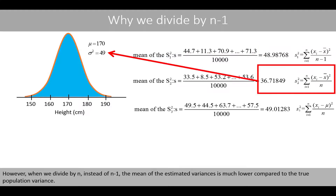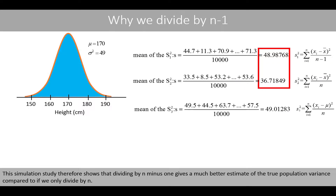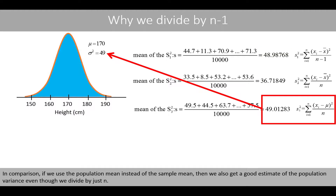However, when we divide by n instead of n minus 1, the mean of the estimated variances is much lower compared to the true population variance. This simulation study therefore shows that dividing by n minus 1 gives a much better estimate of the true population variance compared to dividing by only n. In comparison, if we use the population mean instead of the sample mean, then we also get a good estimate of the population variance, even though we divide by just n.